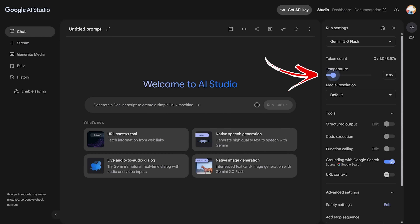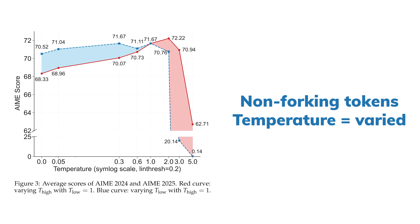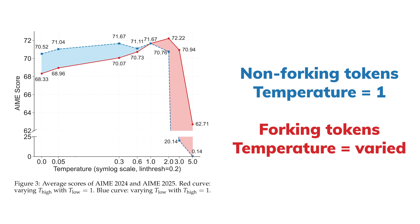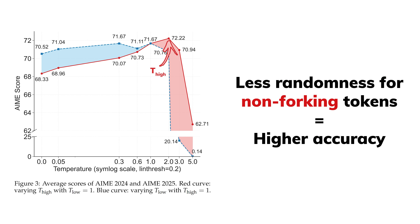Remember the temperature hyperparameter you can control when using LLMs like Gemini? Temperature basically lets you decide how much randomness to inject when you sample from a distribution. By benchmarking the performance of the tokens in the 80th percentile — referred to as non-forking tokens — on varying temperature, versus varying temperature of the top 20% forking tokens at a constant temperature of 1, it shows that keeping the non-forking tokens at lower temperature than forking tokens would always be better, and this is proven across the board.